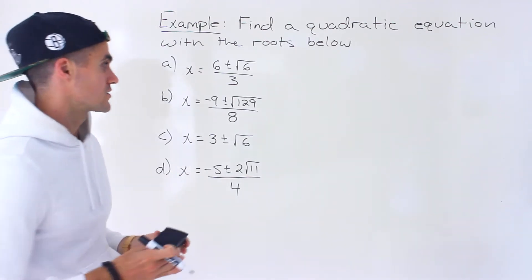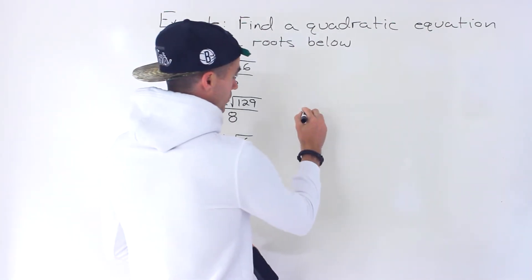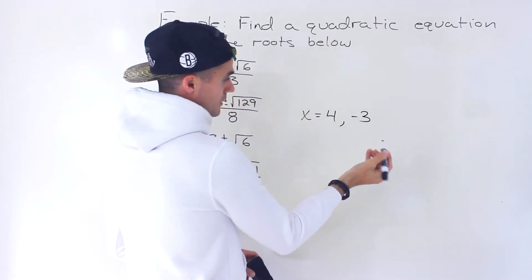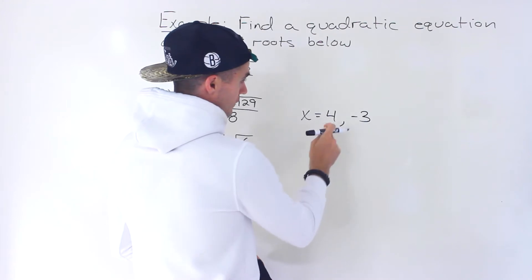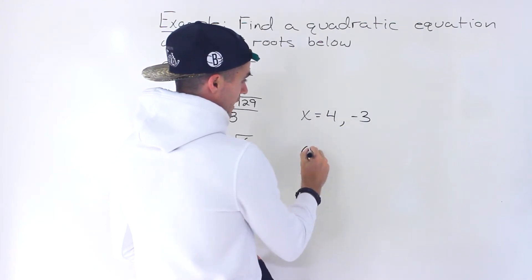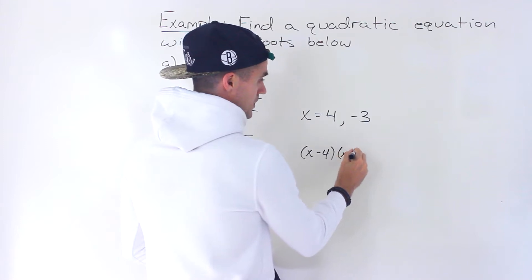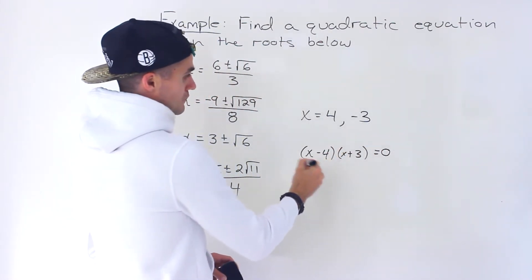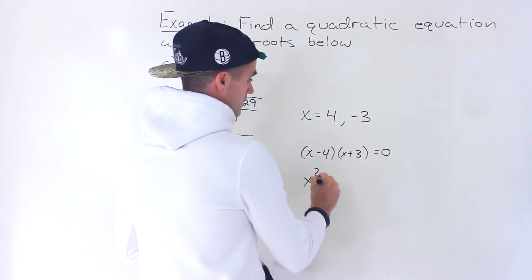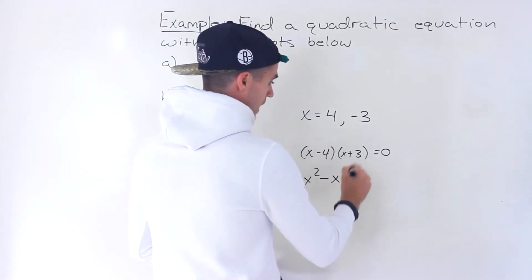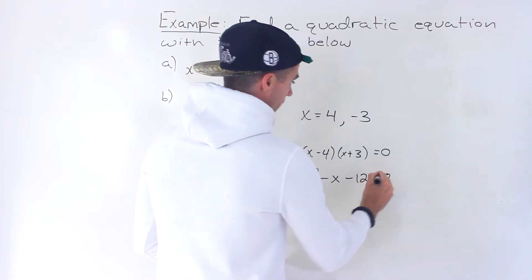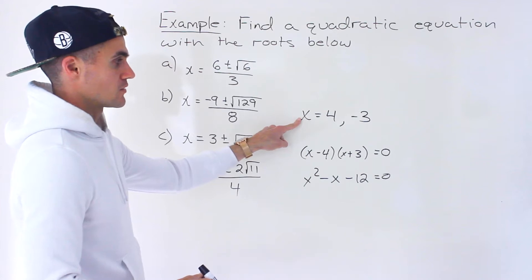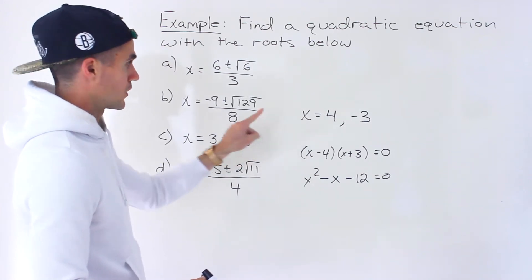With integers it's a lot easier. For example, if we had roots x equals 4 and negative 3, we know that from these roots there would be factors (x − 4)(x + 3), so the equation would equal 0. You can expand the brackets to put it in standard form. The solutions to this quadratic equation are those two values — it's much easier when working with integers.